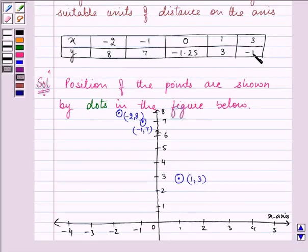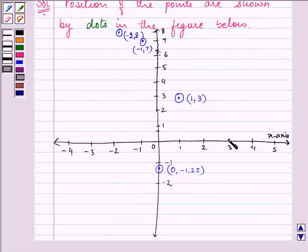Then last, three and minus one. So three and minus one and this point will lie here.